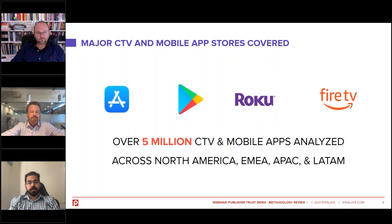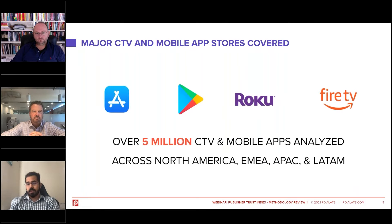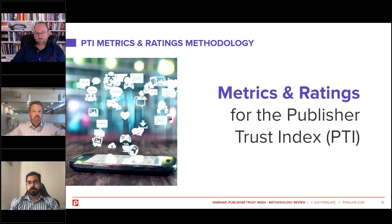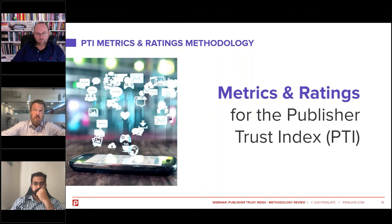Just to follow on what Anzuz mentioned: the publisher trust index basically ranks apps for mobile and CTV. For mobile, the two main platforms are iOS and Android. For CTV, we currently rank apps or publishers for Roku and Fire TV, which are arguably the top programmatic platforms right now. The four main regions that we rank across are North America, EMEA, Asia Pacific, and Latin America. So without further ado, let's get into the methodology for the publisher trust index, and we'll have Anzuz and Melwyn explain the differences between CTV and mobile apps and how we're rating and ranking those.